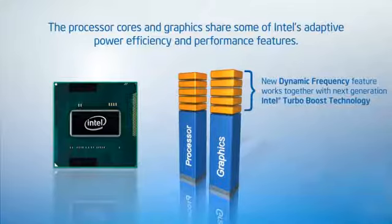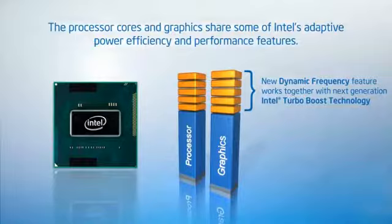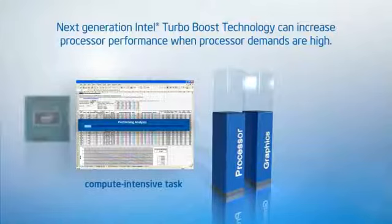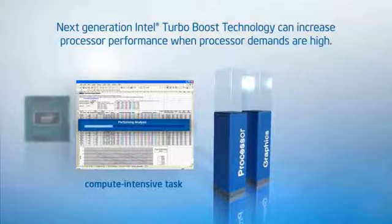These innovations continually monitor processing demand on the processor cores and graphics. If a compute-intensive task requires high demand for processor cores and the chip is running below its operating capacity, next-generation Intel Turbo Boost technology dynamically increases the processor's clock frequency to accelerate performance.